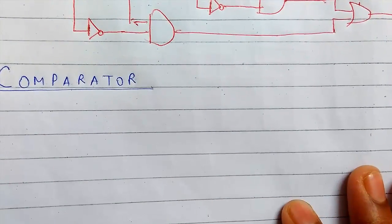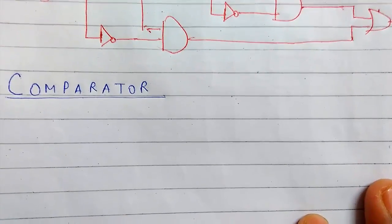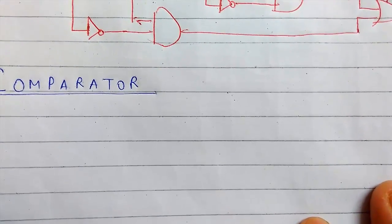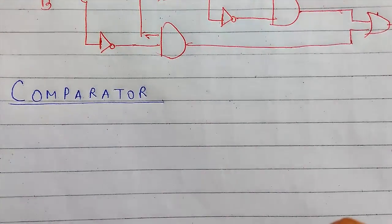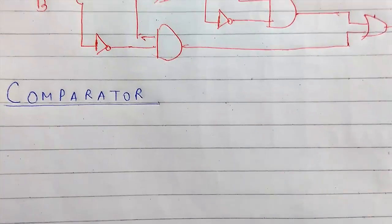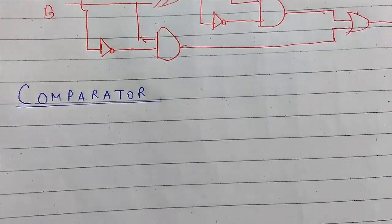The comparator is a device which compares two binary numbers and produces some results. There are two different types of comparators such as identity comparator and magnitude comparator. We will be studying about magnitude comparator.